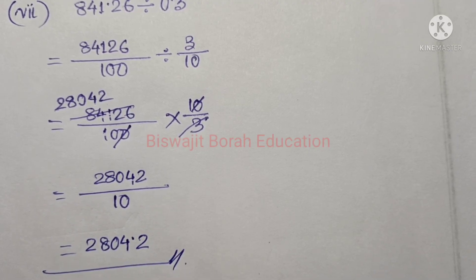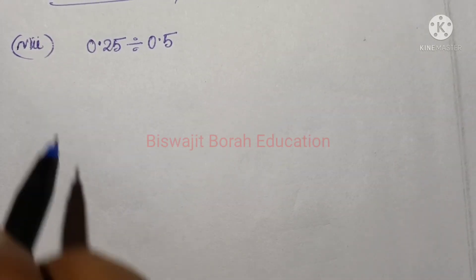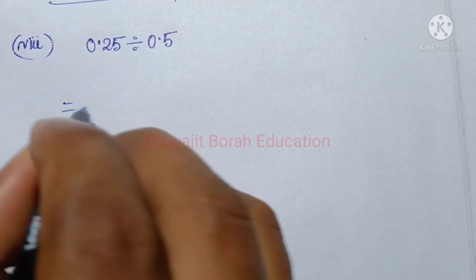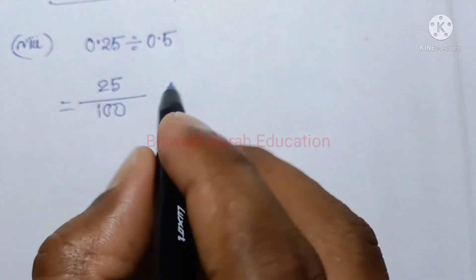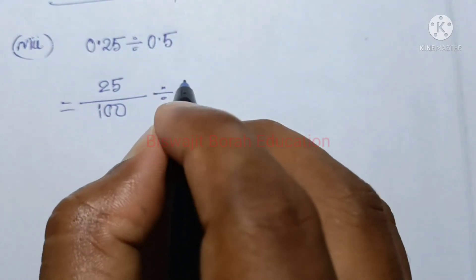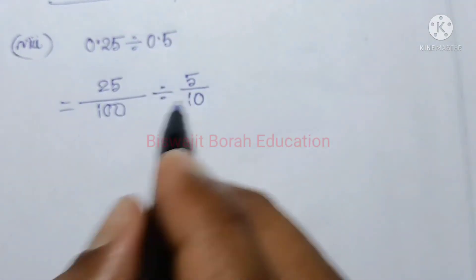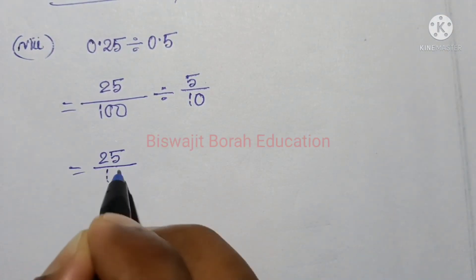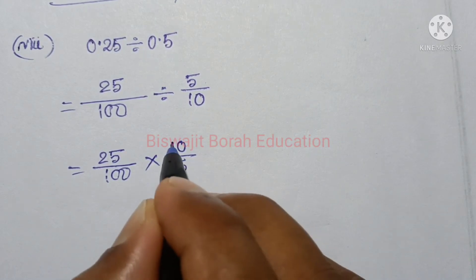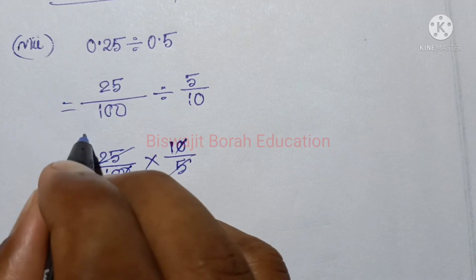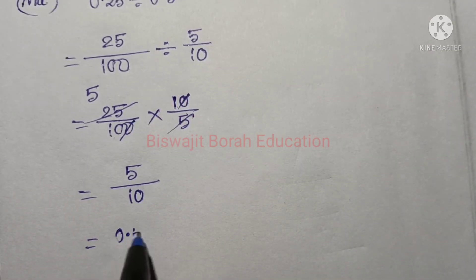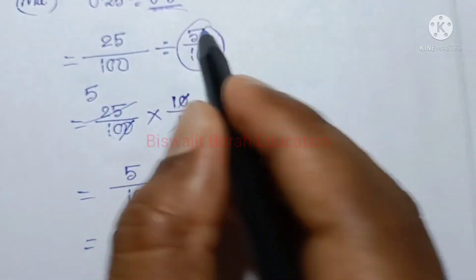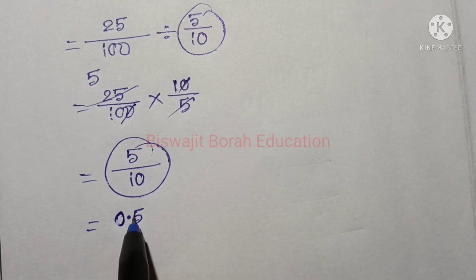Next line: the total is 10, giving 2,804.2. Last act number 2: 0.25 divided by 0.5. The total gives us 0.5. So 5 by 10 is equal to 5 by 10, and 5 by 10 is equal to 0.5. So this is equal to 0.5.